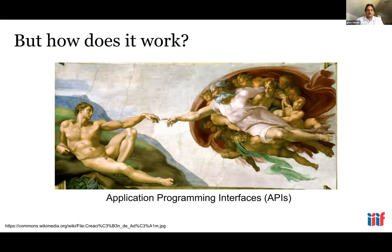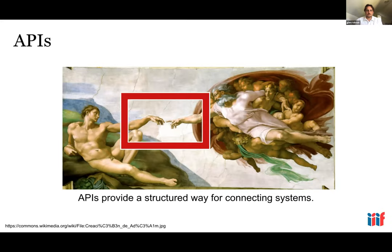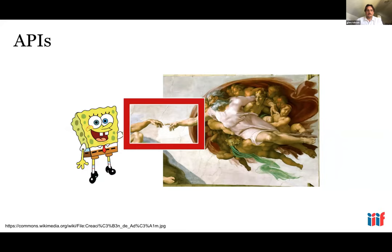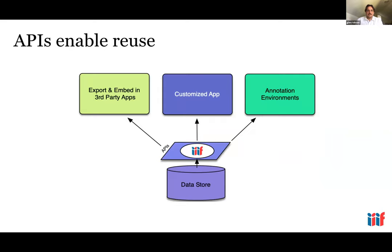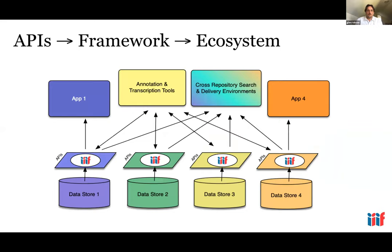Now let's take a high-level look at how IIIF works through its APIs — application programming interfaces. APIs function as a sort of agreement between two parts of a system, allowing data to consistently go in one way and out another, enabling you to switch out different pieces like front ends or back ends. This shared contract at an institution level allows you to simplify your stack and use off-the-shelf tools developed by others, including shared viewers, crowdsourcing systems, and map georeferencing tools.